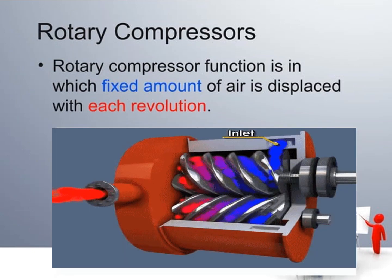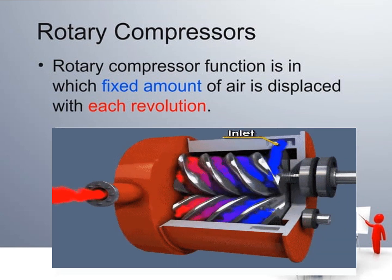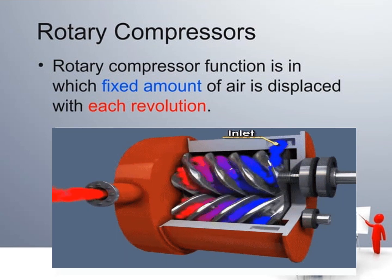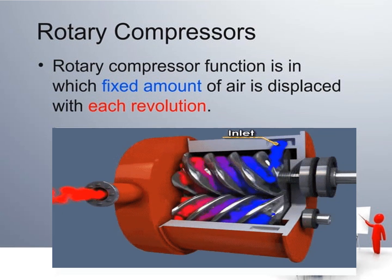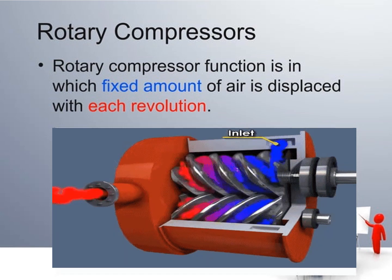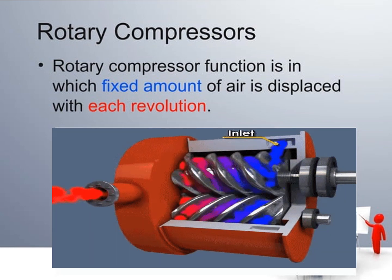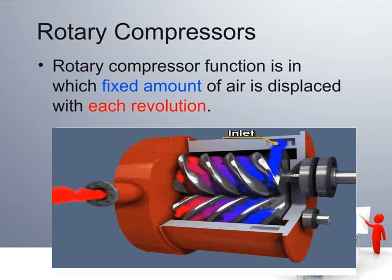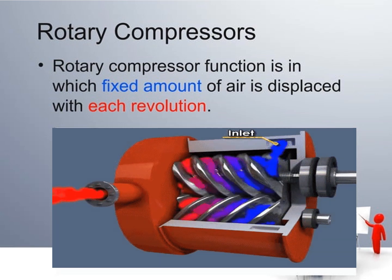The rotary compressor is designed to displace a fixed amount of gas with each revolution. For every single rotation, the rotary compressor provides output. In the diagram, the inlet is shown in blue and the outlet in red, with gas being displaced with each revolution.